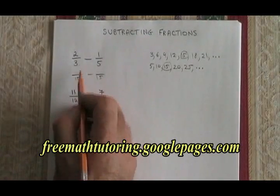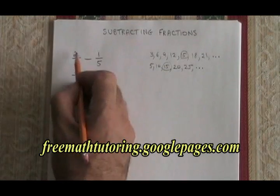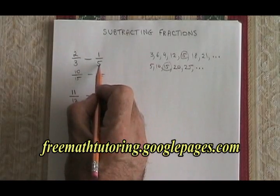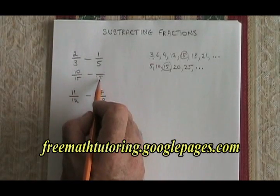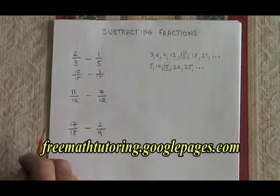The 3 has to be converted into a 15, and I do that by multiplying it by a 5. So therefore, the 2 has to also be multiplied by a 5, and 2 times 5 is 10. 5 is converted into 15 by multiplying it by 3. So the 1 has to be multiplied by a 3, and I get 3 over 15.